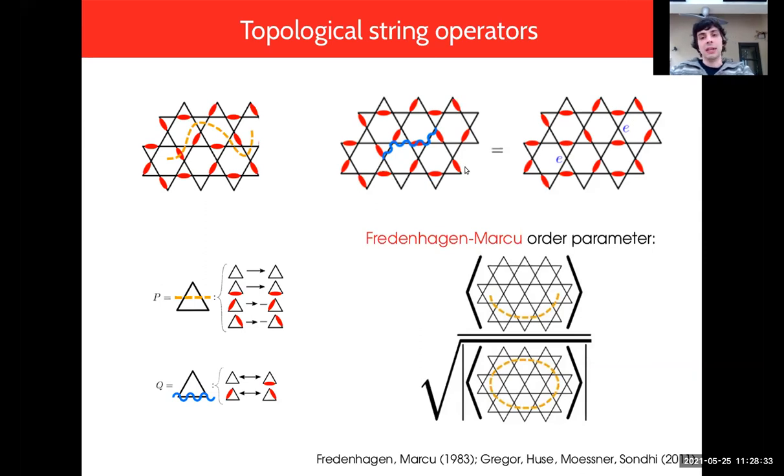There's also a dual order string which anti-commutes with this parity string, which ends up shuffling dimers around. For any closed loop it'll map one dimer configuration to another, but with an open string it ends up creating monomers or Z2 gauge charges at the endpoints. This is similar to what we're used to from toric code.